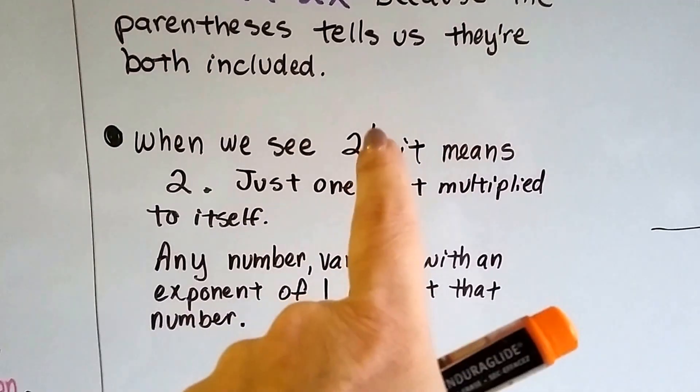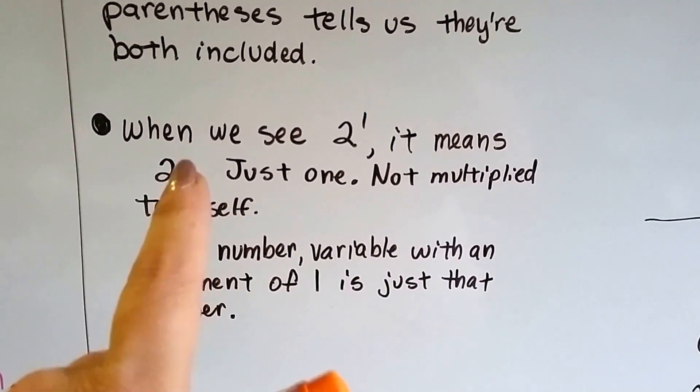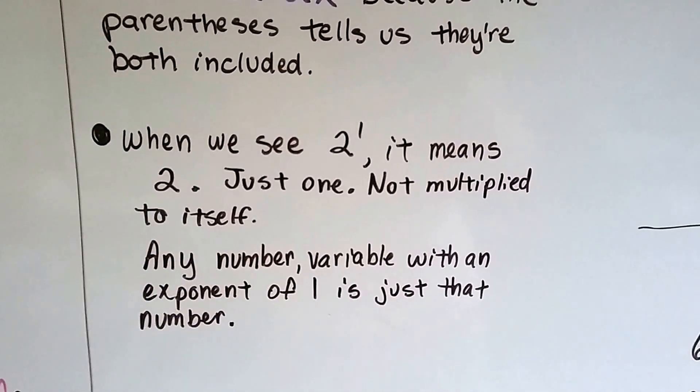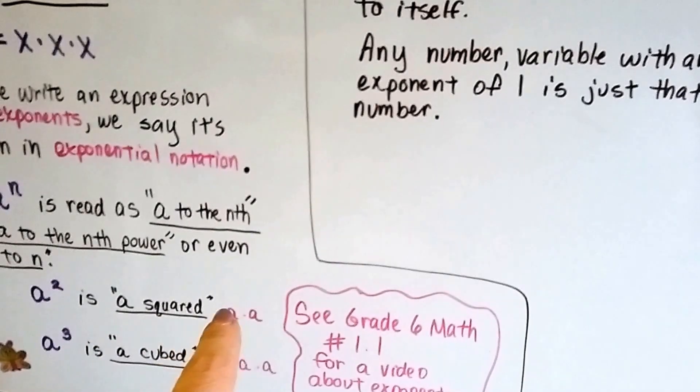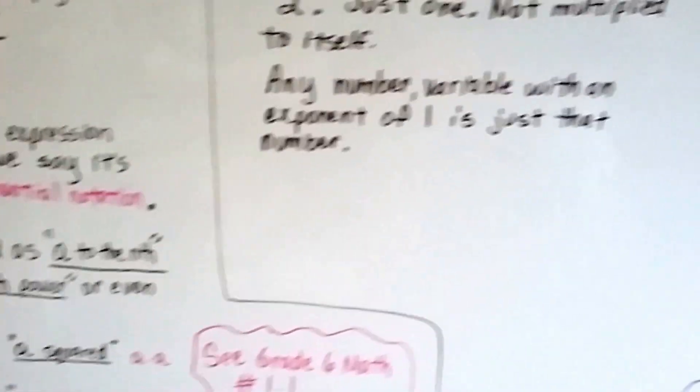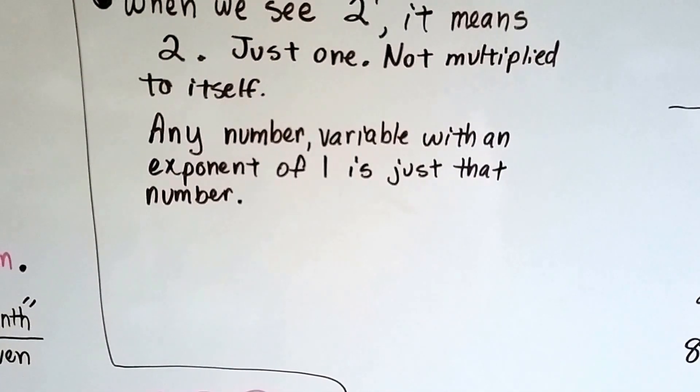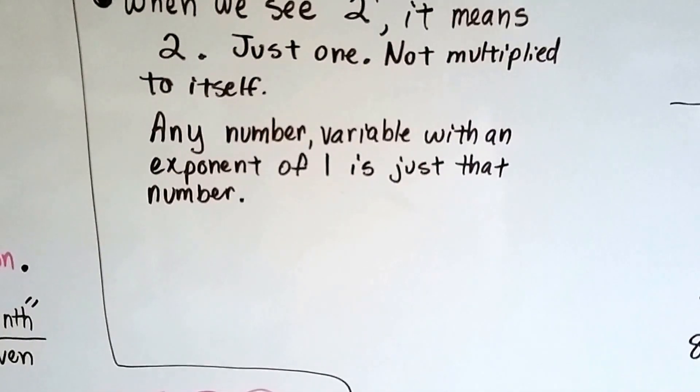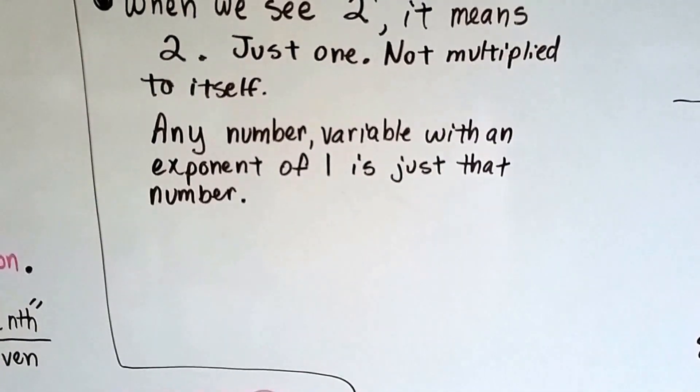When we see 2 to the 1, it means 2. There's just 1. It's not multiplied to itself. Just as if we saw a to the second power is a times a, if it was just a to the 1, there would just be 1a. So any number variable with an exponent of 1 is just that number. It keeps its identity.